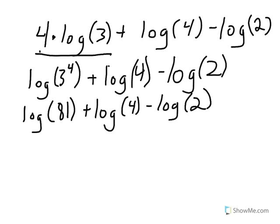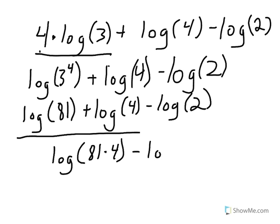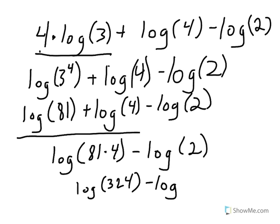Just to note: since no base is written on any of these logs, they are all base 10. Now, moving to addition and subtraction from left to right, since we're adding two separate logs, we can condense them into one log by multiplying: 81 times 4. The log(2) does not change. Simplifying 81 times 4 gives us log(324) minus log(2).